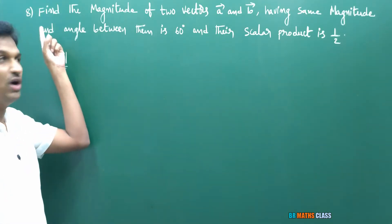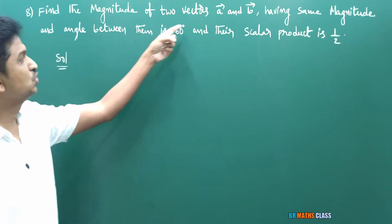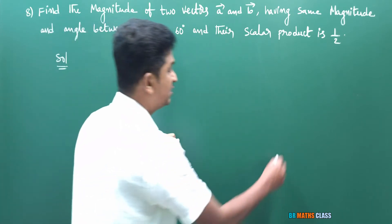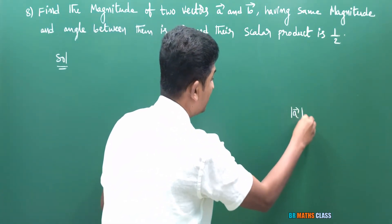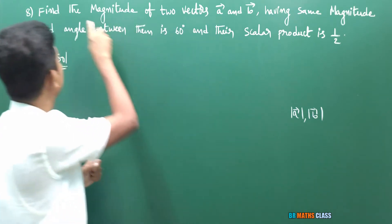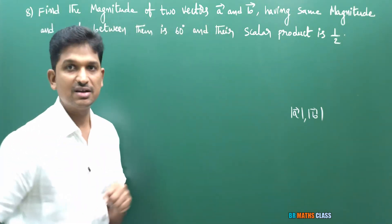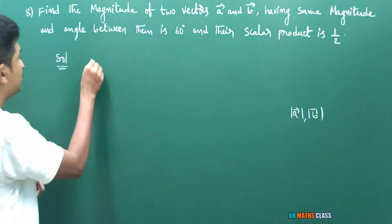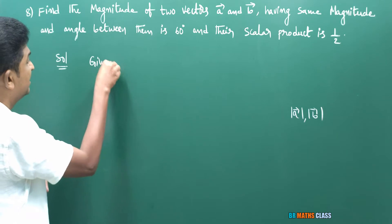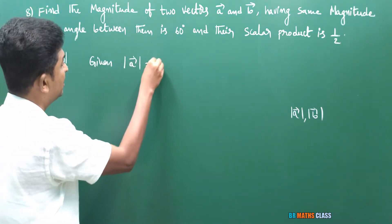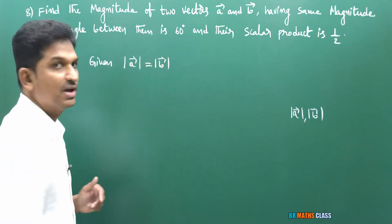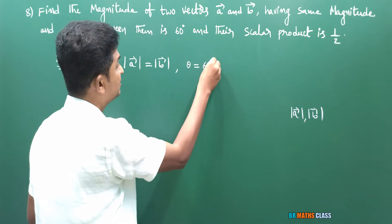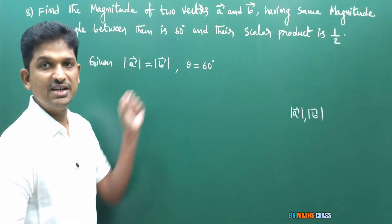You observe question number 8 — what they are asking: find the magnitudes of vectors A̅ and B̅. They given that the two vectors have the same magnitude, so |A̅| = |B̅|. And the angle between them is 60 degrees. They also given that A̅ · B̅ = 1/2.